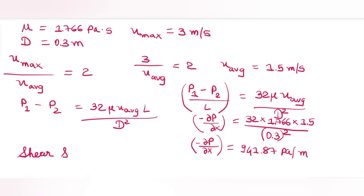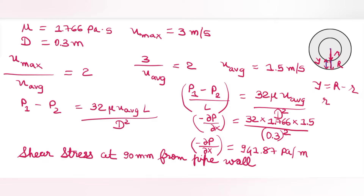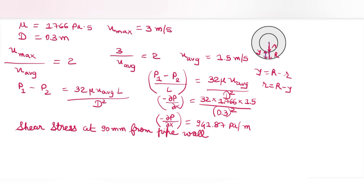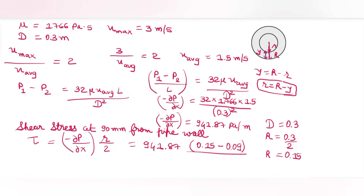Now we need to find the shear stress at 90 mm from the pipe wall. From the circular pipe element, y = R - r, so small r = R - y. Using tau = (-dp/dx) * r / 2 = 941.87 × (0.15 - 0.09) / 2, we get tau = 28.256 Pascal.